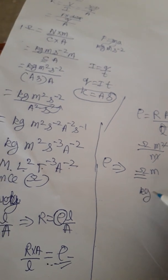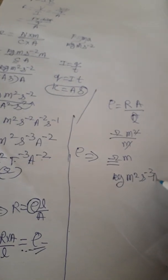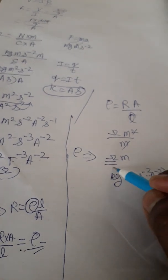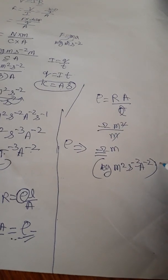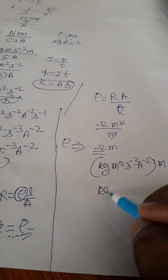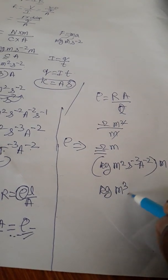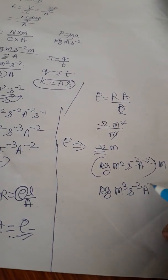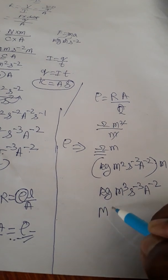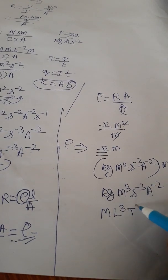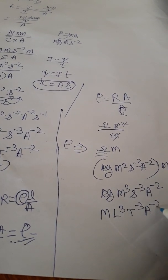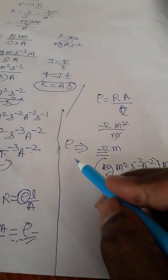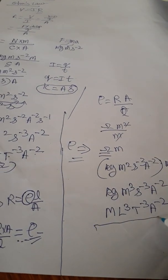We already know the ohm unit is kg·m²·s⁻³·A⁻². Now multiplying by meter gives kg·m³·s⁻³·A⁻² for resistivity. That means the dimensional formula for resistivity is ML³T⁻³A⁻².